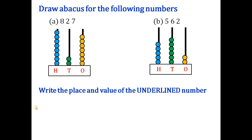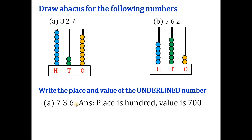Next question: write the place value of the underlined digit. The number is 733 and the underlined digit is 7. The place is hundreds and the value is 700. Next: in 683, the underlined digit is 8, so the place is tens and the value is 80.